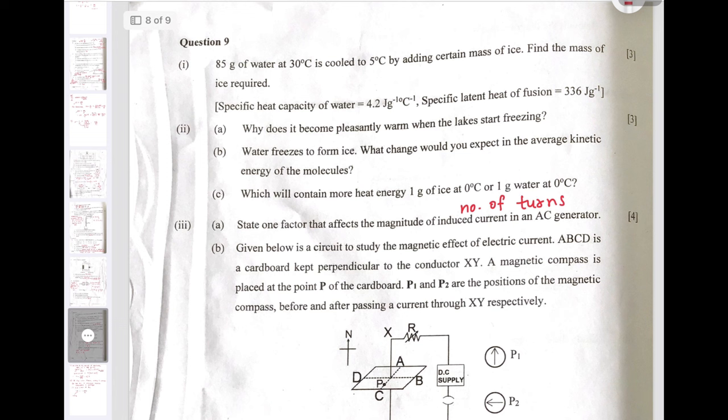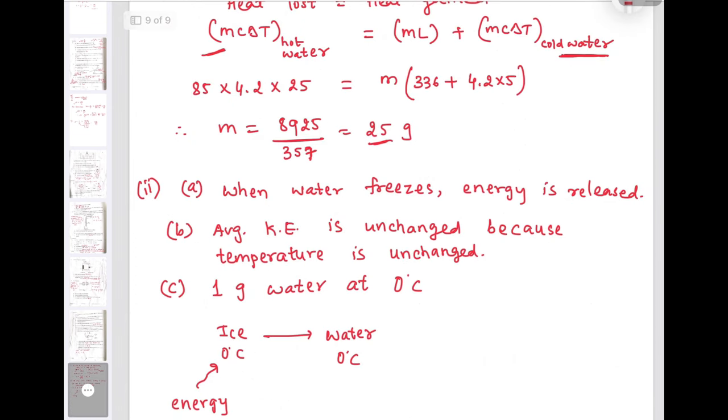The next sub question: Why does it become pleasantly warm when the lakes start freezing? When the lake starts freezing, when water freezes into ice it loses the heat energy. Whatever heat energy is lost by water of the lake, that is released in the surrounding and hence the surrounding becomes warm.